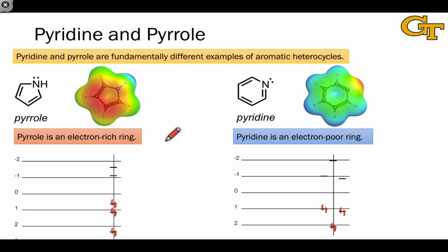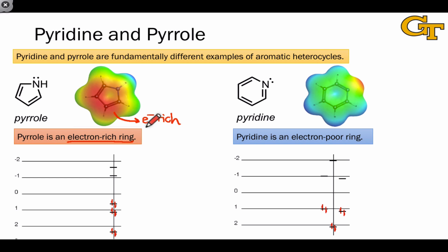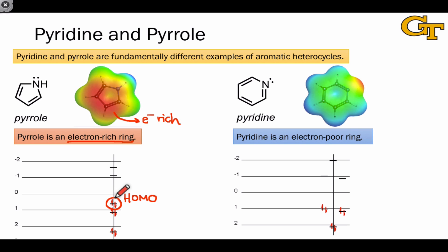Now let's look at pyrrole and pyridine side by side. The resonance structures of pyrrole with negative charge on the carbon atoms emphasize that pyrrole is an electron-rich ring. The aromatic carbons are rich in electrons, as evidenced by the red area in the electrostatic potential map. We should expect pyrrole to be a better nucleophile than benzene because it's more electron-rich — it has less of an issue giving electrons away. We can also see this effect in the energy of the highest occupied molecular orbital: this pair of electrons is higher in energy than the HOMO of benzene.